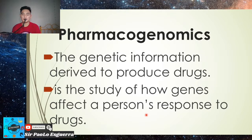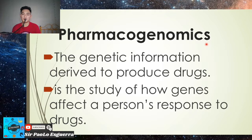The third area is pharmacogenomics — the study of how genes affect a person's response to drugs. Genetic information is used to produce and evaluate drug products. For example, before Biogesic was released by the manufacturer, it underwent pharmacogenomics testing to determine whether it would have harmful effects on people.